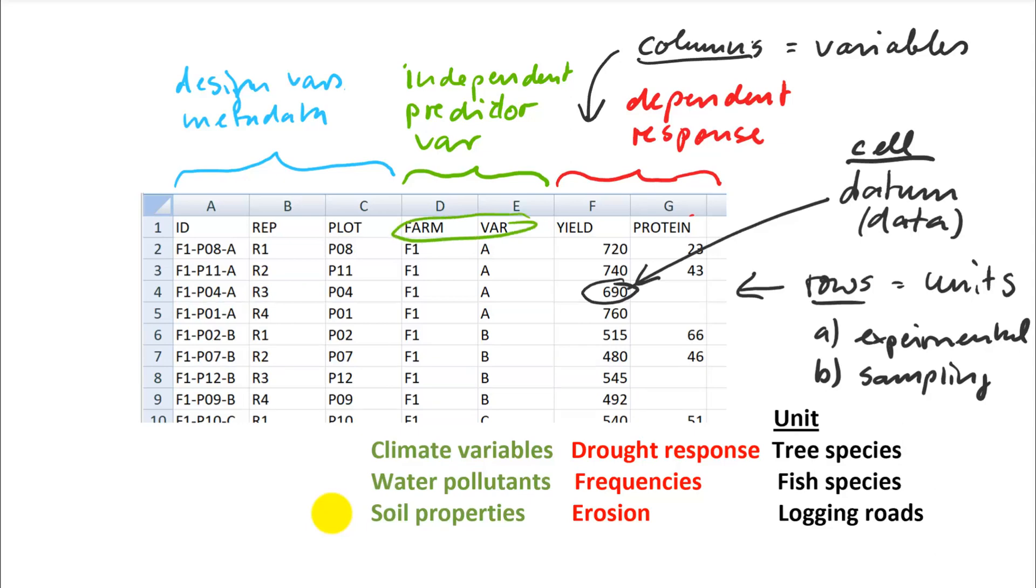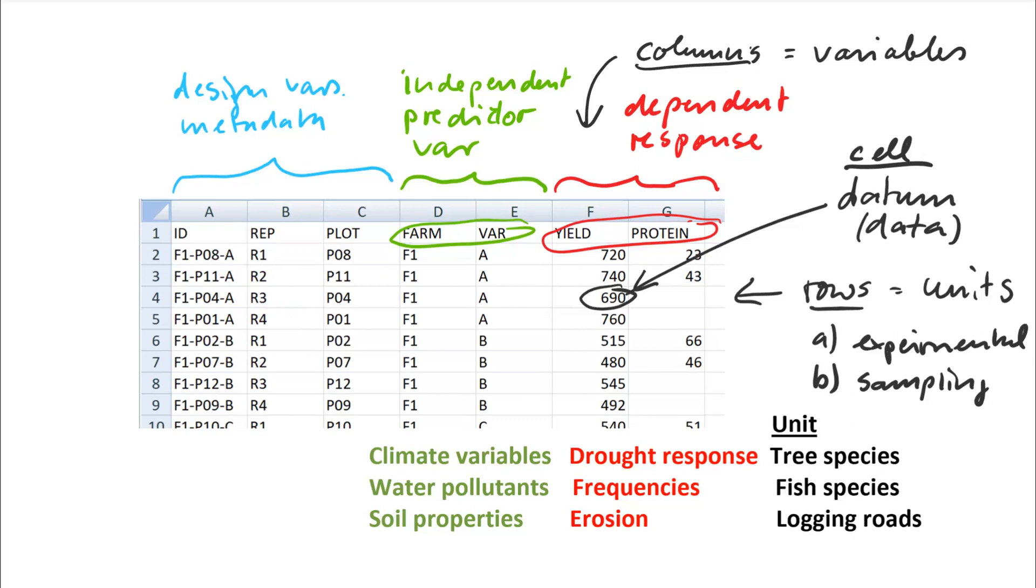And of course, we had our agricultural experiment here as well, where we had environments represented by different farms, maybe a dozen farms, dozen experimental farms across the country, and varieties. So that represents genetics as independent factors. And our response variables would be yield and protein content that you record, or different plant varieties.